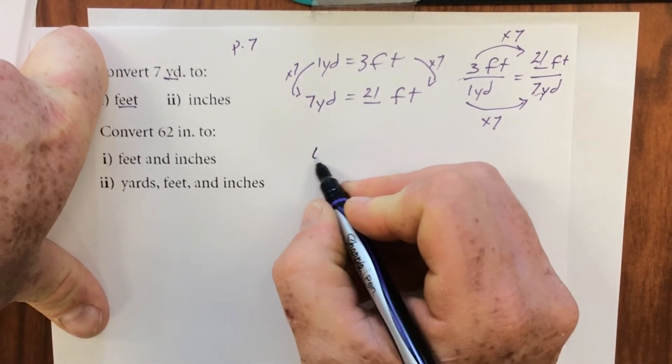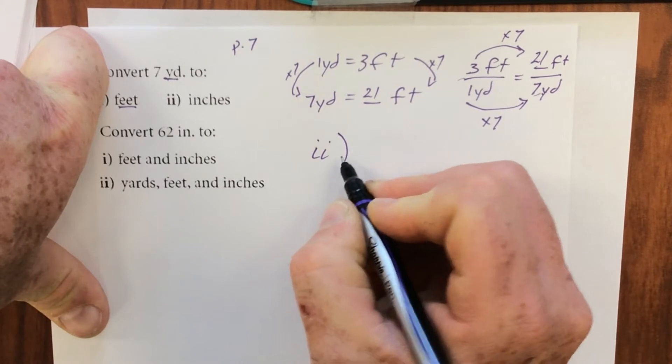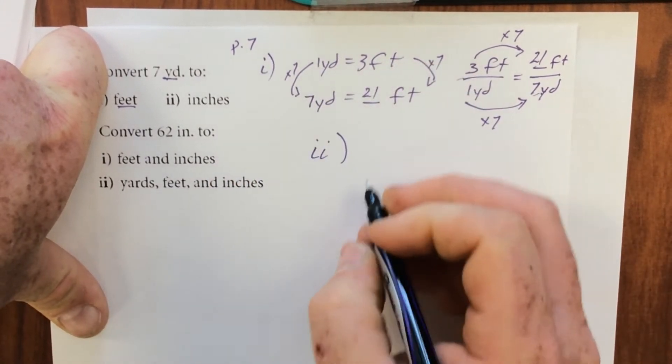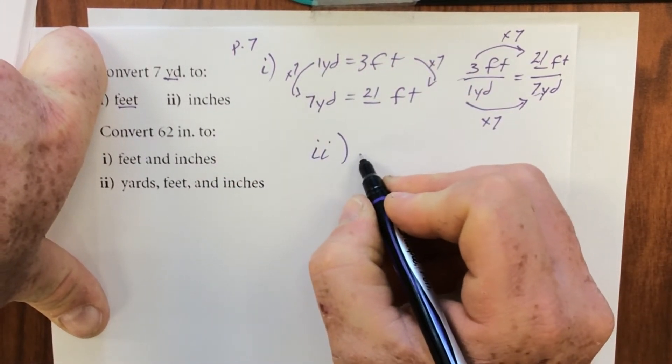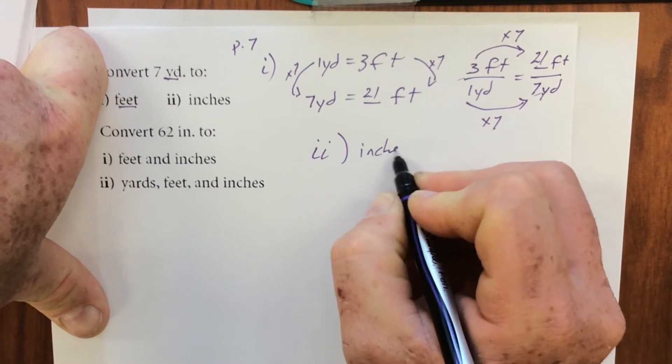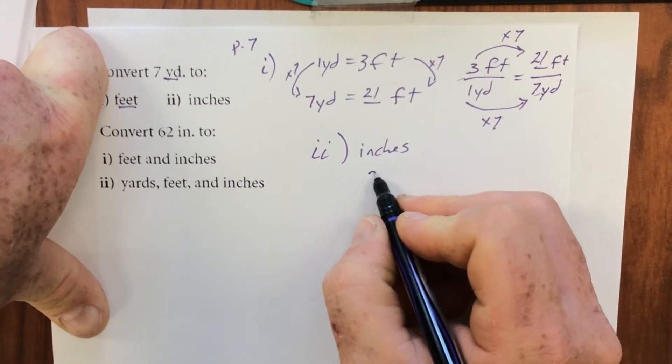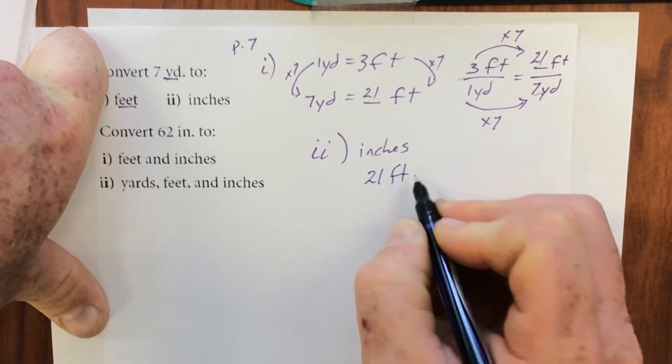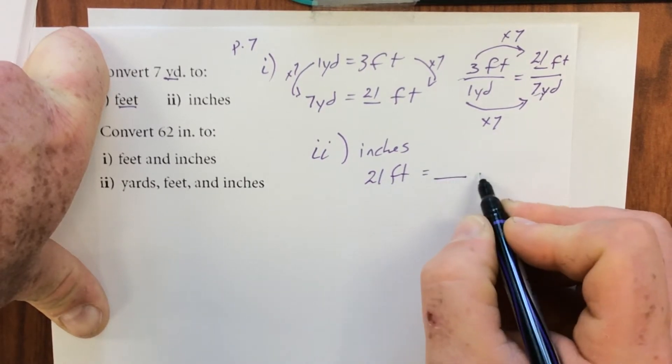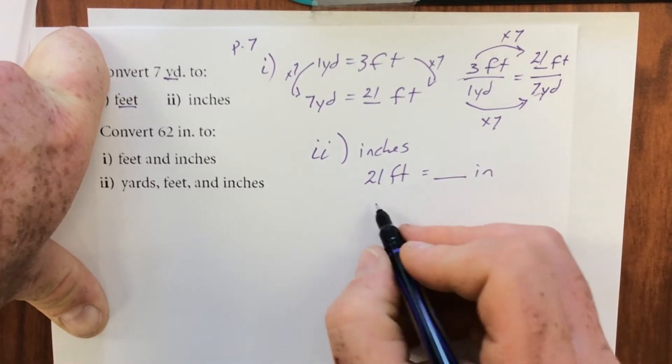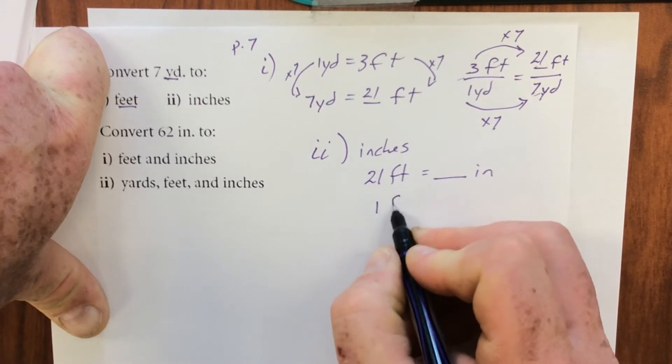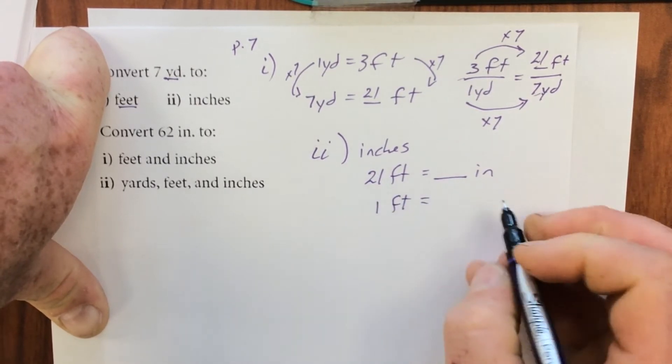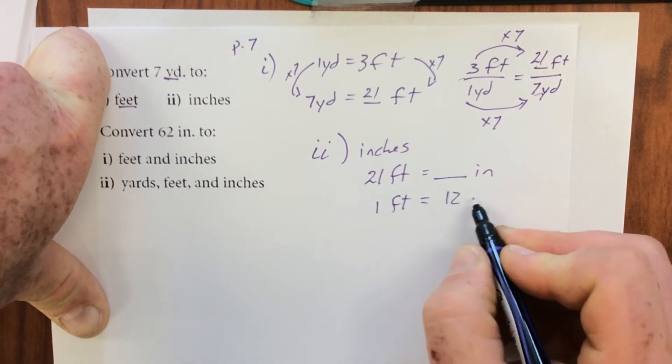Part two, that's part one. Part two wants us to go to inches. Well, we already know we have 21 feet. How many inches is that going to be? Well, we know one foot is equal to 12 inches.